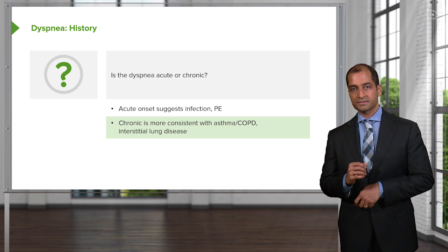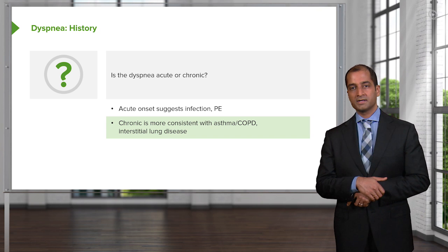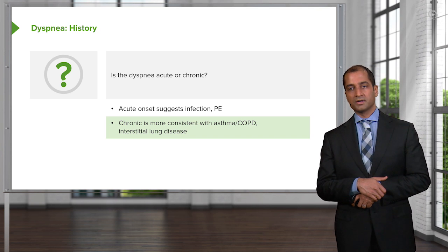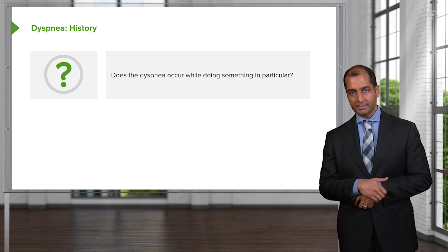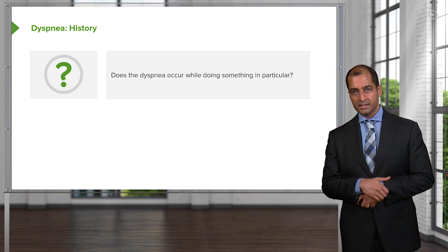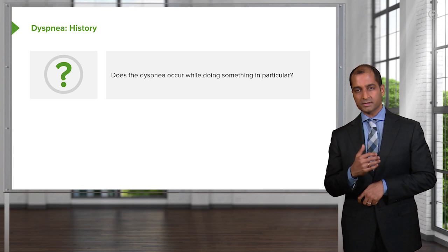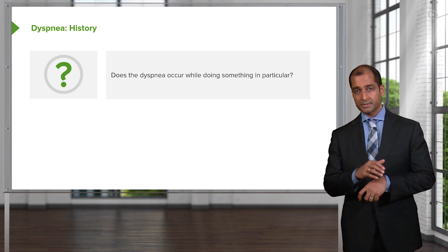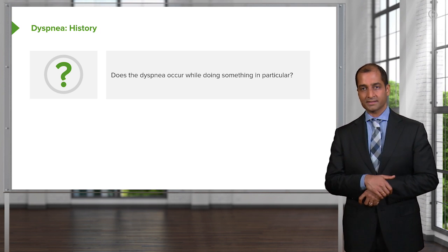Chronic is more consistent with COPD or perhaps interstitial lung disease, and we'll get into that when we talk about fibrosis. What about the dyspnea — does it occur while doing something in particular? Was there an exposure taking place, maybe to an allergen? That will tell you what caused the dyspnea in that case.